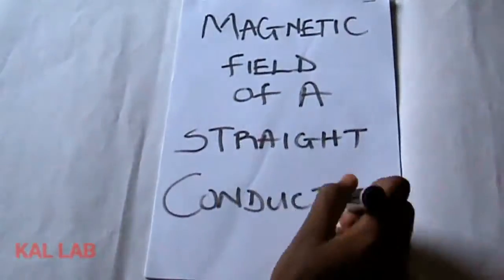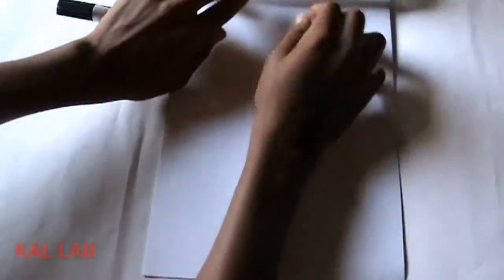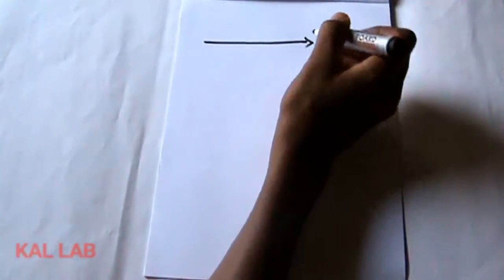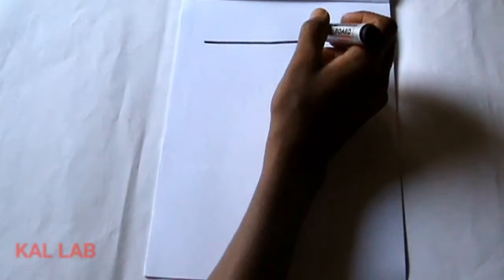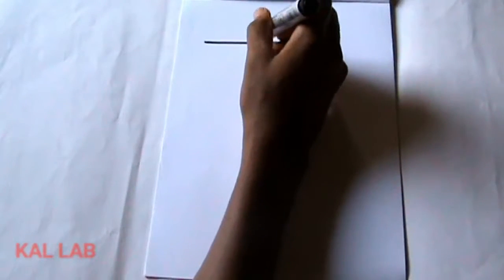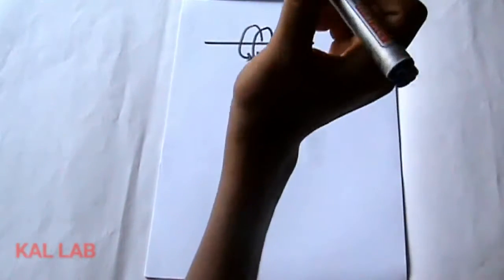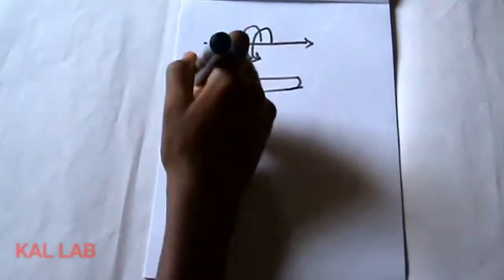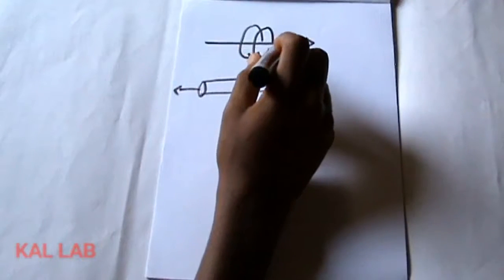Good day viewers, today we'll be looking at an important topic under physics which is the magnetic field of a straight conductor in electromagnetism. It has been proven that if a current flows through a straight line conductor in this direction, the current is going to generate a magnetic field around the conductor which would be in this direction.